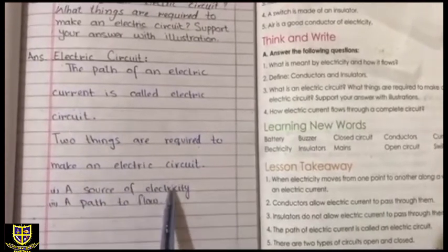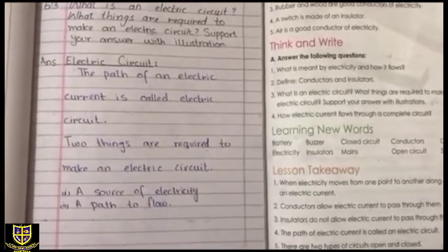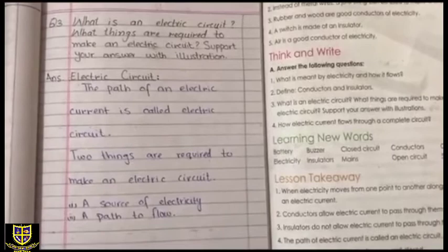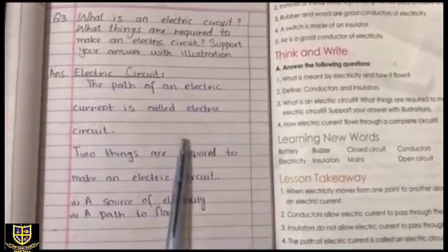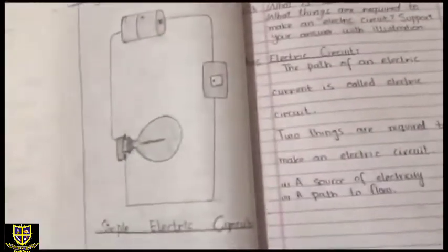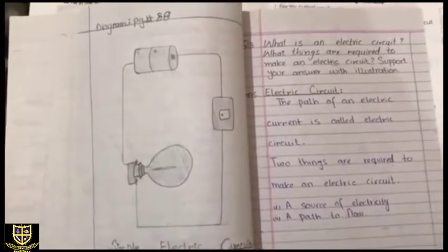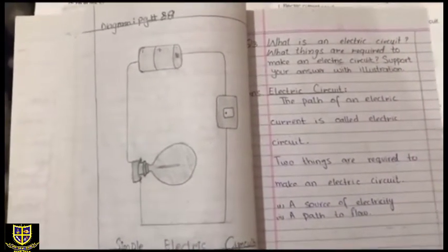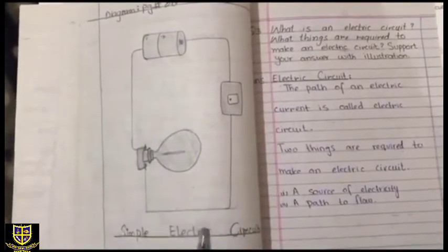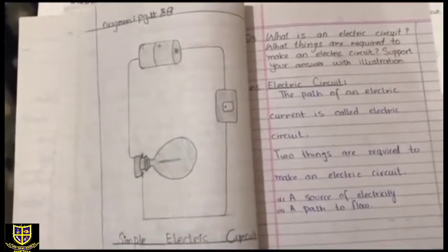Number one: a source of electricity. Number two: a path to flow. So this is your answer for question number three. You also have to make the diagram of an electric circuit the same way as shown on page number 88 in the book. You have to draw that diagram from page number 88.